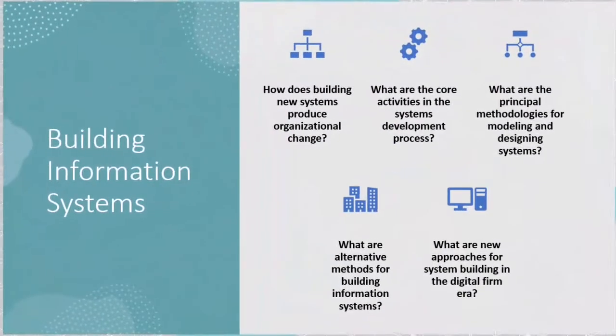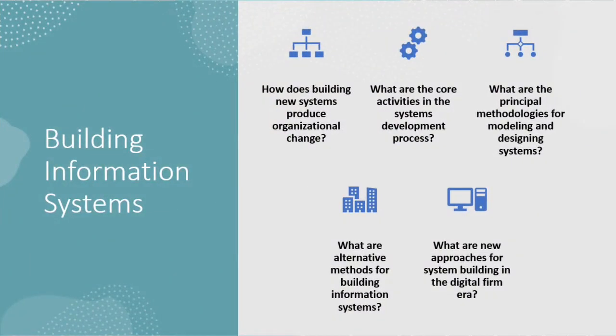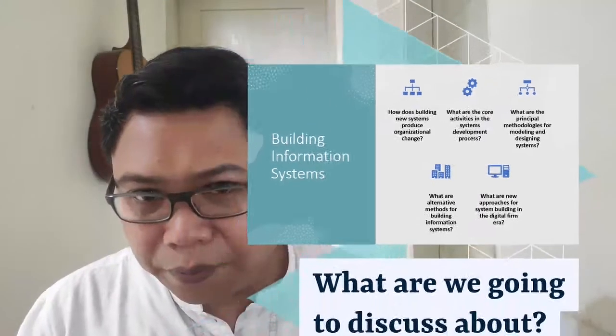In this chapter, we're going to discuss about five topics: how does building new systems produce organizational change; what are the core activities in the systems development process; what are the principal methodologies for modeling and designing systems; what are alternative methods for building information systems; and what are new approaches for system building in the digital firm era. I will discuss the first three topics, and the last two will be discussed by my colleague.